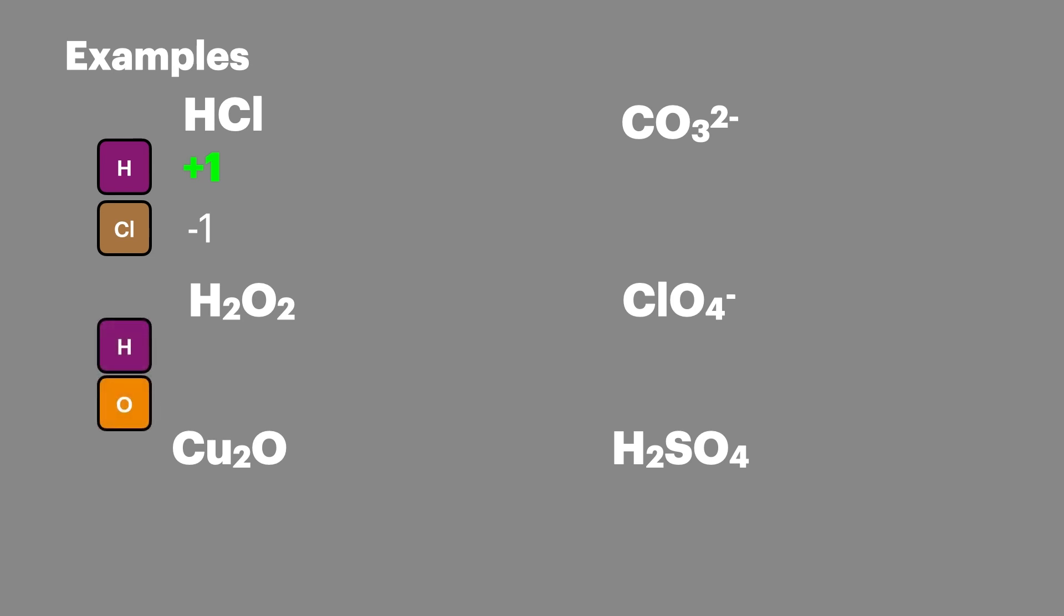Next we'll look at hydrogen peroxide. We'll first look at the hydrogen from our rules and we'll know that to be plus one. And there are two of them together, so that will combine together to make plus two.